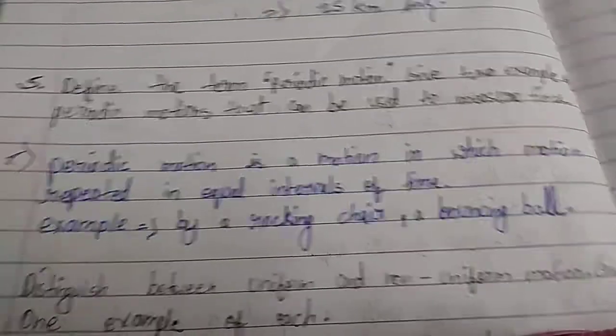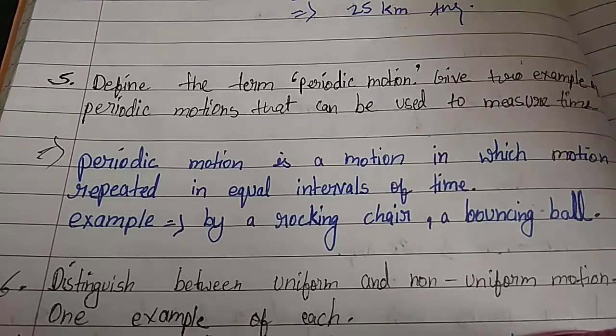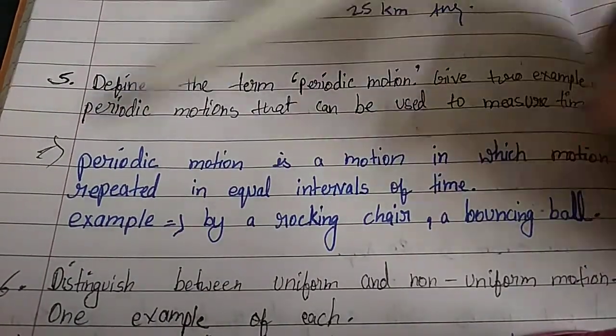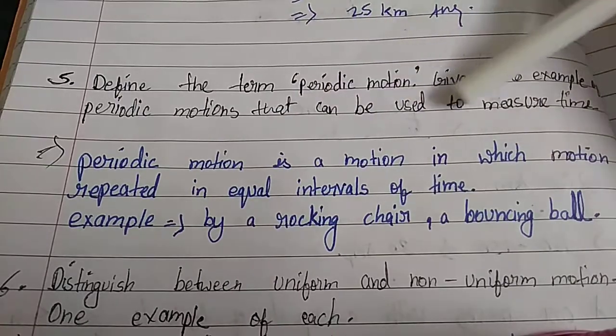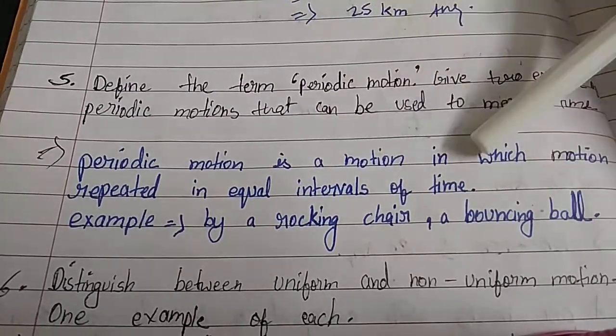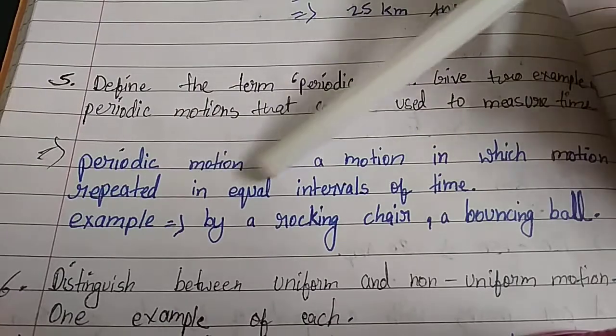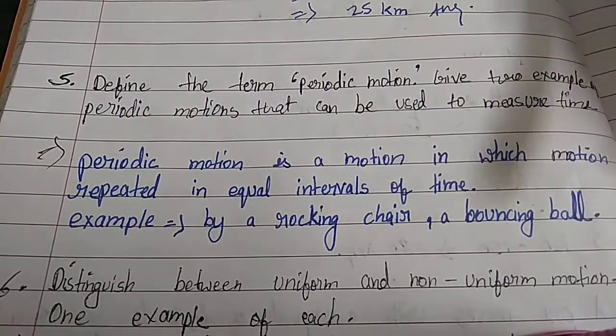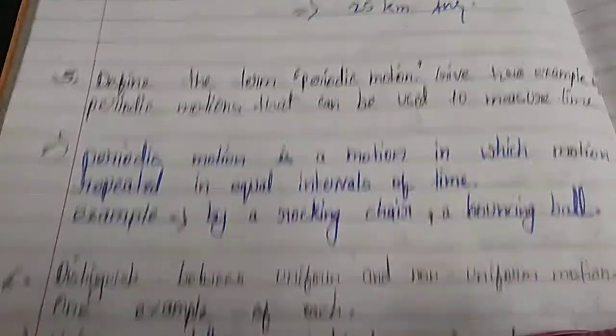This is our math question, and now we have our science question. Define the term periodic motion. Give two examples of periodic motion that can be used to measure time. Periodic motion is a motion in which motion repeats in equal intervals of time. Examples: a rocking chair, a bouncing ball. This is our fifth answer.